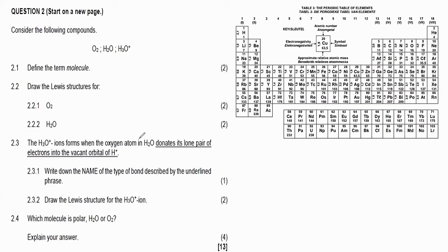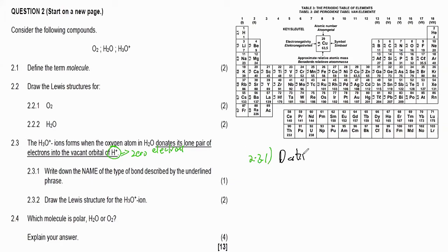It says the H3O plus ion forms when the oxygen atom in H2O donates its lone pair of electrons into a vacant orbital of the hydrogen ion. Remember, H plus means that hydrogen has lost its electron — it has zero electrons — so it will not be able to donate its own electron. So 2.3.1 asks: write down the name of the type of bond described by the underlying phrase. We call that the dative covalent bond.